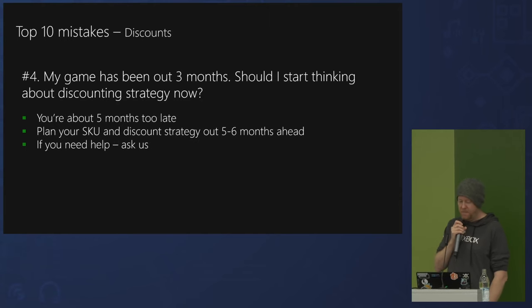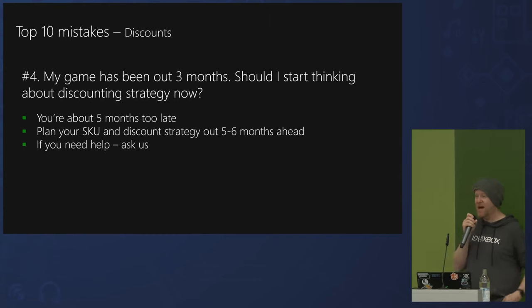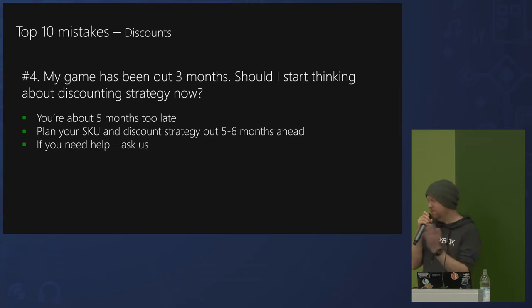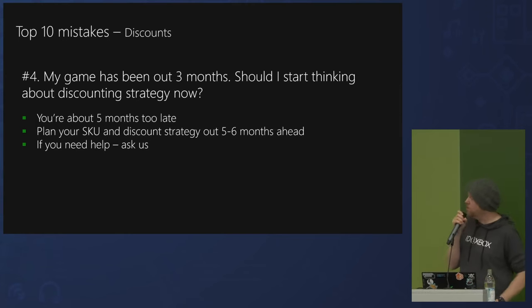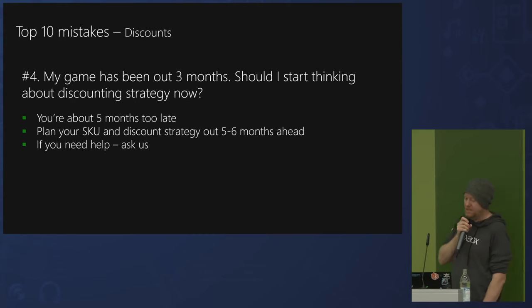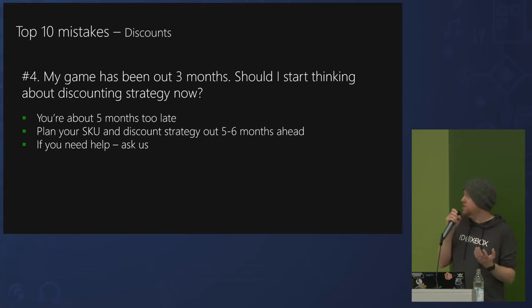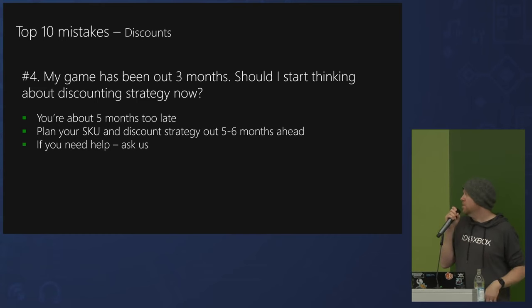Number four: you need to plan your discounts about a year in advance. Have a post-release plan — know when you're launching, when you'll do your first discount, when you'll do your first DLC. You can do a discount on our platform at any time and you'll get strikethrough pricing, but nobody will see it unless they search for your game or have it in a wish list. If you want to be in sales and promotional events, you need to talk to us in advance and plan it.